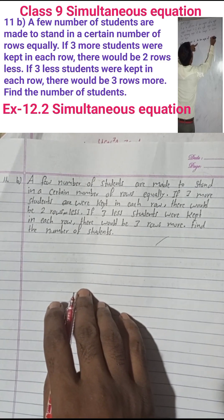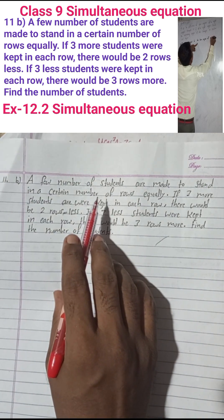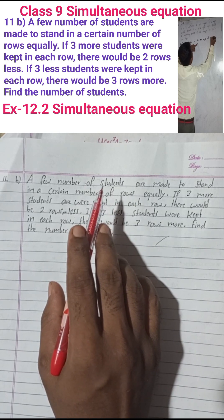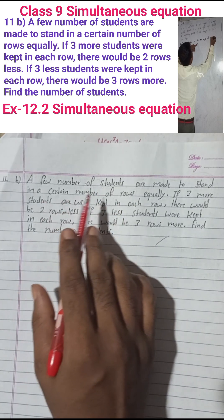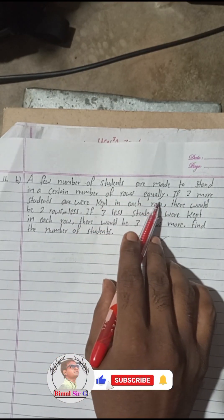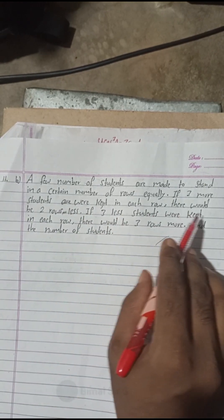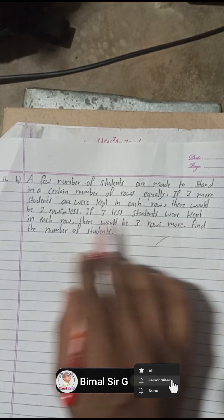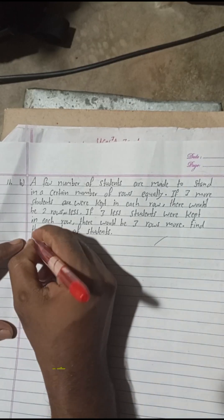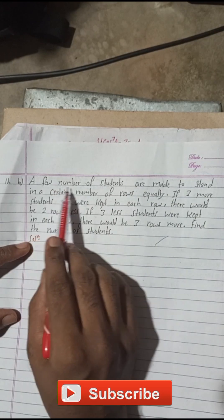Hi everybody, welcome back to Bimbal Surgery YouTube channel. This is a question from Class 9 Compulsory Mathematics, Exercise 12.2, Simultaneous Equations, Chapter 11B. A few number of students are made to stand in a certain number of rows equally. If three more students were kept in each row, there would be two rows less. If three less students were kept in each row, there would be three rows more. Find the number of students.